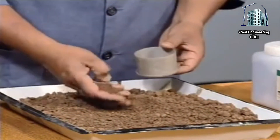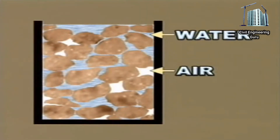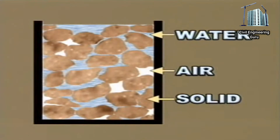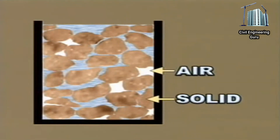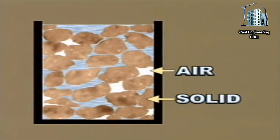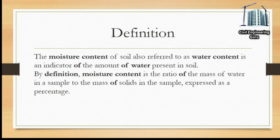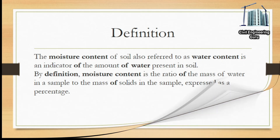The moisture content of soil, also referred to as water content, is an indicator of the amount of water present in soil. By definition, moisture content is the ratio of the mass of water in a sample to the mass of solids in the sample, expressed as a percentage.